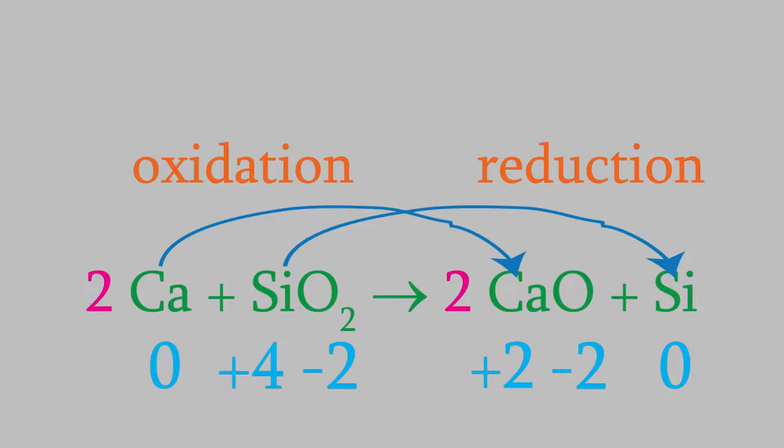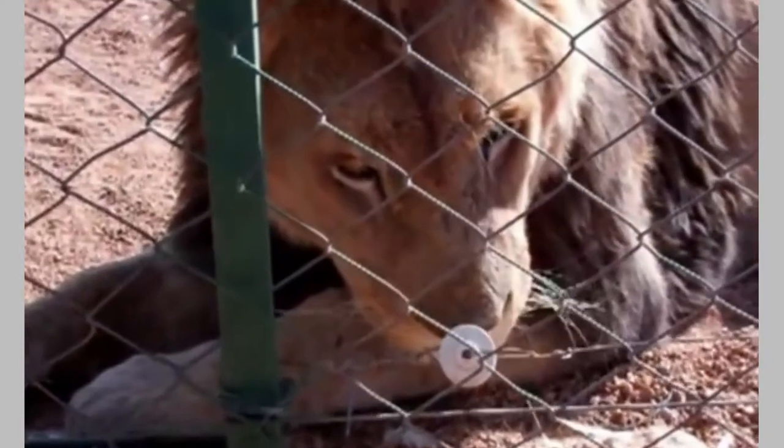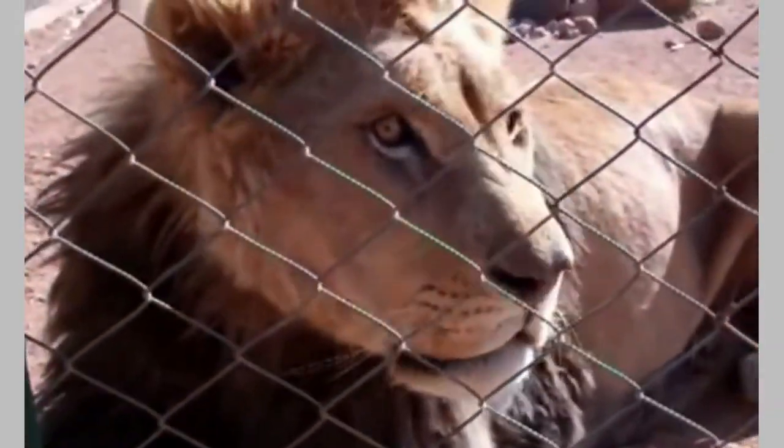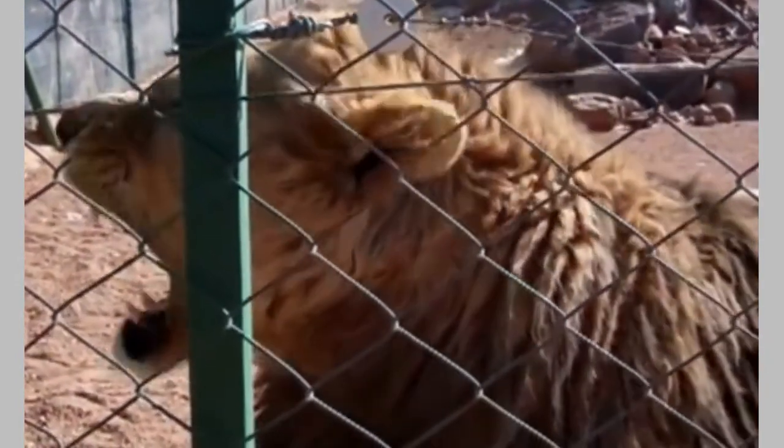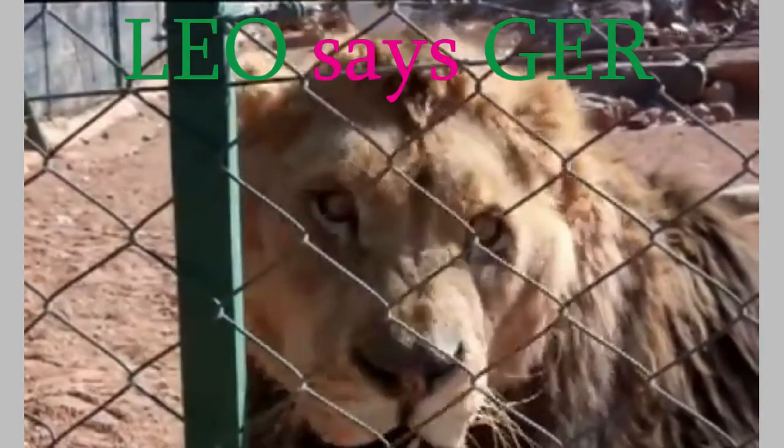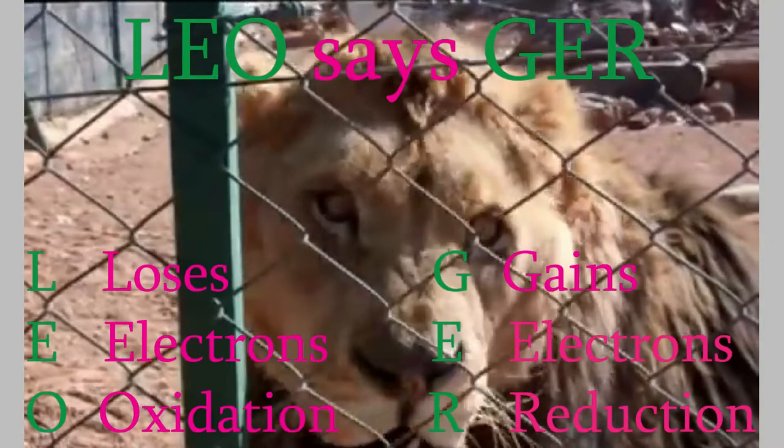Some people have a hard time remembering the difference between reduction and oxidation. So here's an easy way to keep them straight. Leo the lion says GER. That's Leo, L-E-O, which stands for loses electrons, oxidation. And GER, G-E-R, which stands for gains electrons, reduction.